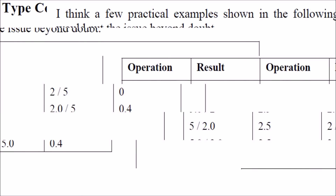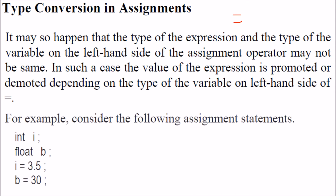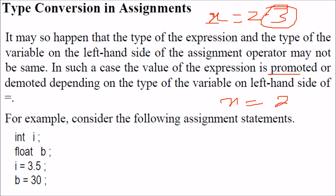Type conversions in assignment: when dealing with an assignment, the left-hand side and right-hand side may be of different data types. The value of the expression is promoted or demoted depending on what is on the left-hand side. If the left side is an integer and you have 2.3, the 0.3 will be truncated. But if x is a float and you assign 2, it will be promoted to 2.0.